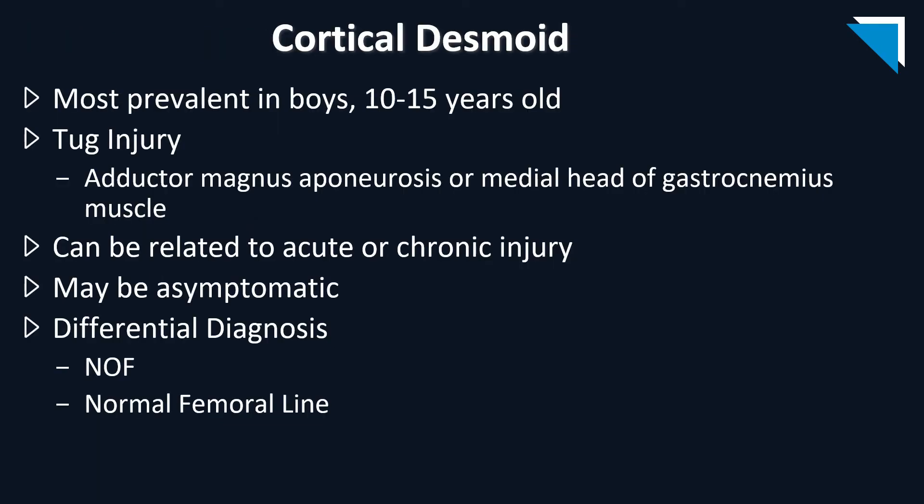A cortical desmoid is most prevalent in boys 10 to 15 years of age and is a tug-related injury at the adductor magnus aponeurosis or medial head of the gastrocnemius muscle. This may be related to an acute or chronic injury and can be asymptomatic. The differential diagnosis includes a non-ossifying fibroma or a normal femoral line, which I will show you in the next slide.